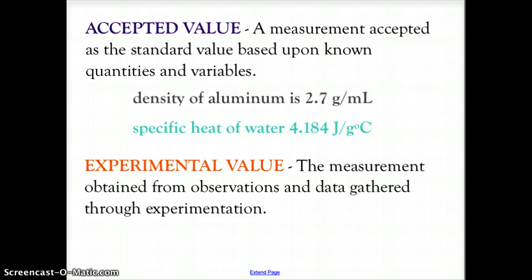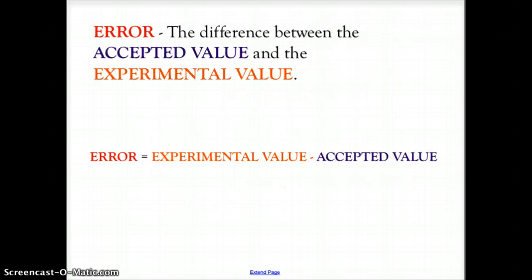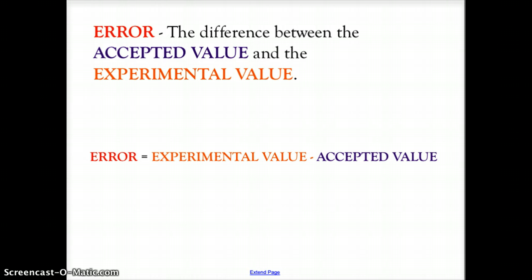The difference between the experimental value and the accepted value is called our error. In our labs, because we don't have perfect equipment, there are going to be certain mistakes made — whether you spilled some material, left some residue in the beaker, or had residue on the watch glass. Those errors create a difference between the experimental value you obtain and the accepted value, the known value that all chemists accept as the true value.